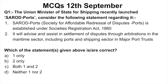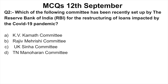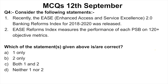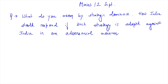Now we'll go to the question section. Please pause the video and try to answer. Question 1 is about SAROD ports — consider the statement and identify the right option. Question 2 is about the committee formed by the RBI for loan restructuring impacted by COVID-19. Question 3 is about G20 — read the statement and identify the right option. Question 4 is about EASE 2.0 — Enhanced Access and Service Excellence 2.0. The main question for today from GS Paper Number 2 is a 10-marker: 'What do you mean by strategic dominance? How should India respond if such a strategy is adopted against India in an adversarial manner?' Please try to provide innovative dimensions in your answer.